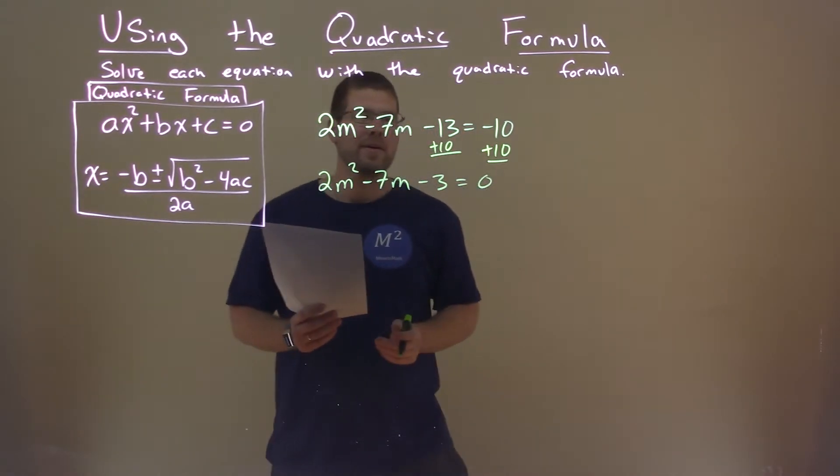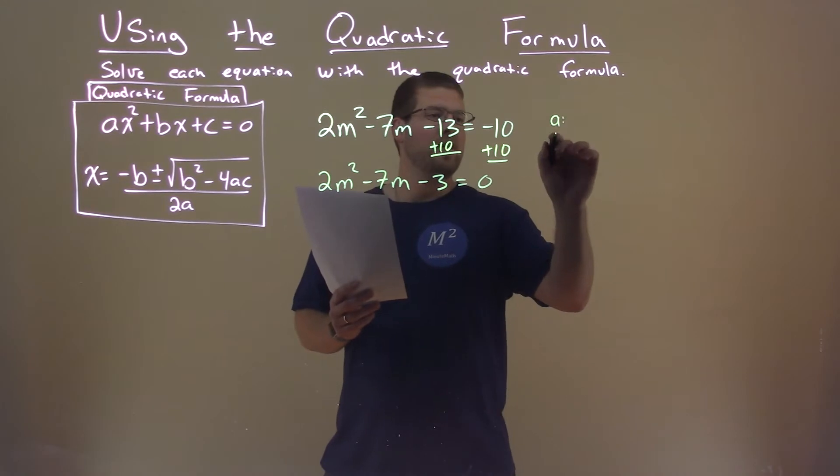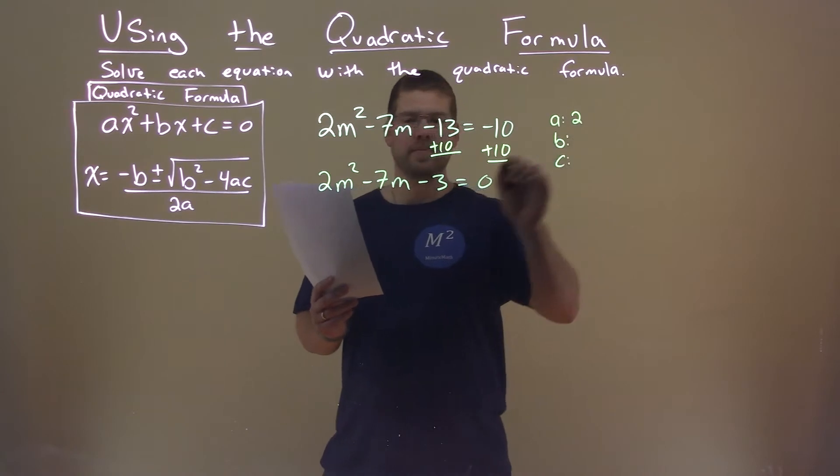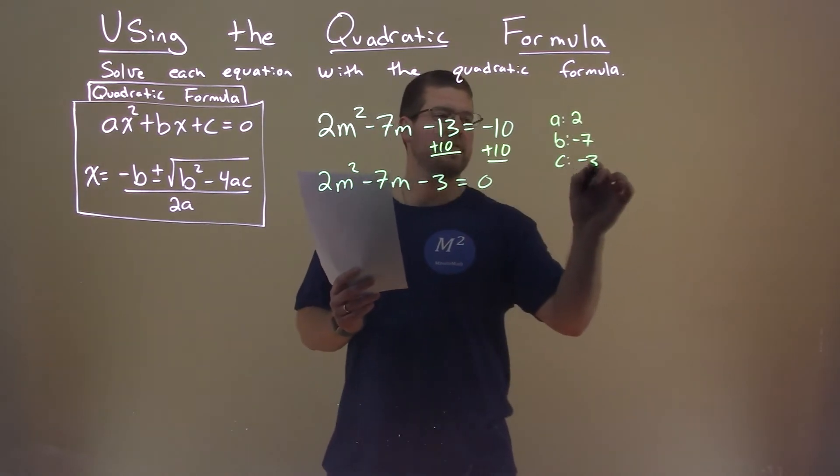And with that, we can find our a value, b value, and c value for the quadratic formula. a is 2, b is -7, and c is -3.